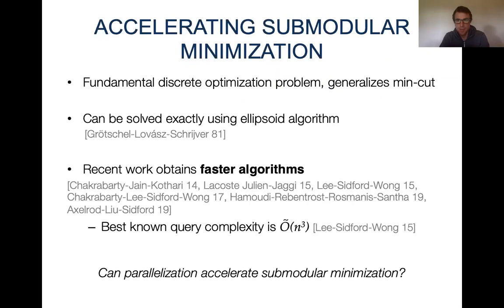The problem of minimizing a submodular function is a fundamental discrete optimization problem and generalizes many important problems such as min-cut, and it has many applications in areas such as computer vision and speech analysis. It has been known since the early 80s that this can be solved exactly in polynomial time using the ellipsoid algorithm. However, the ellipsoid algorithm is very slow in practice and requires many queries to the objective function.